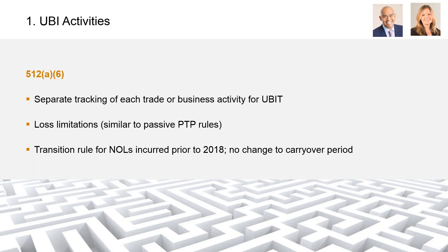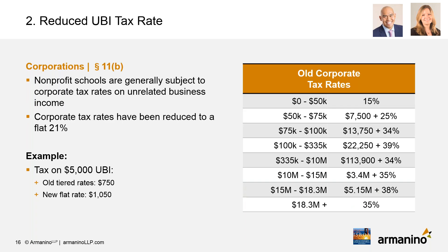The other significant change to unrelated business income is that corporate tax rates have changed from a tiered system to a flat 21%. Unlike most other TCJA provisions, this is a permanent change. Congress imposes UBI tax to put exempt organizations that participate in revenue-generating activities outside their exempt purpose on the same footing as taxable businesses. The corporate tax rates and AMT rules apply to schools with unrelated business activities.